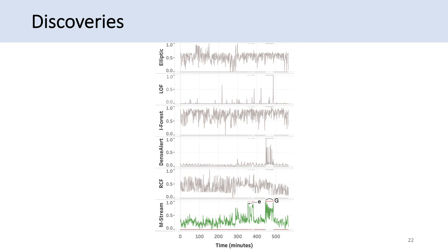Local outlier factor and DenseAlert miss a lot of anomalies. Elliptic envelope, isolation forest, and random cut forest output many high scores unrelated to attacks. M-STREAM does quite well. This G is a group anomaly which M-STREAM detected. Elliptic envelope, local outlier factor, and isolation forest missed it. DenseAlert and random cut forest partially caught it but aren't fully effective in high-dimensional datasets.